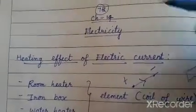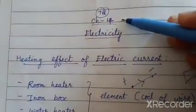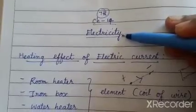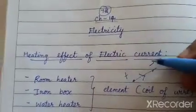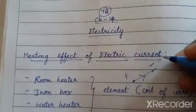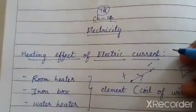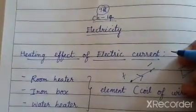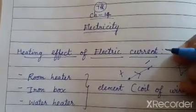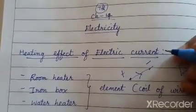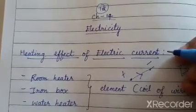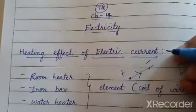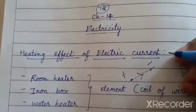Good morning children. Today we are going to see Physics chapter 14, Electricity. In the last class we discussed about fuse and how the fuse is overcome — when and why does it happen. It's because of short circuiting and overloading of current.